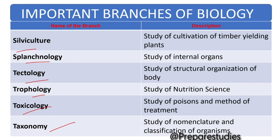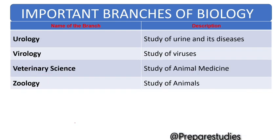Taxonomy: study of nomenclature and classification of organisms. Urology: study of urine and its diseases. Virology: study of viruses. Veterinary science: study of animal medicine. Zoology: study of animals.